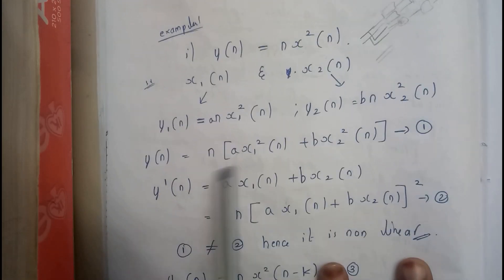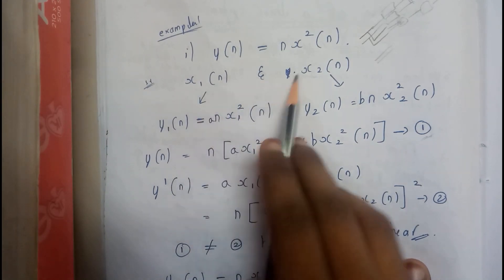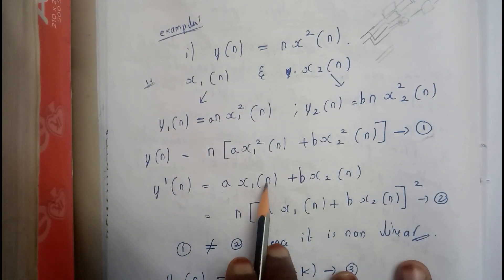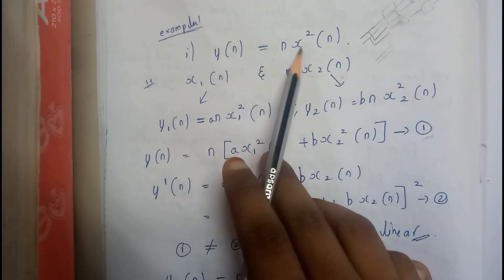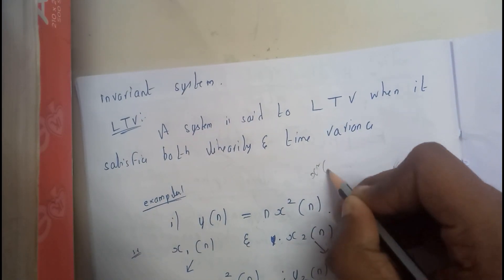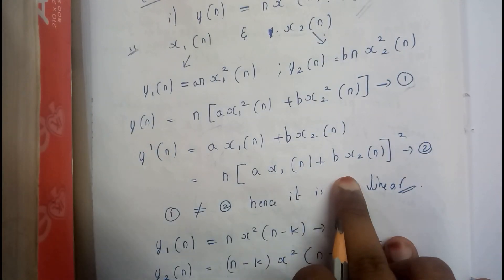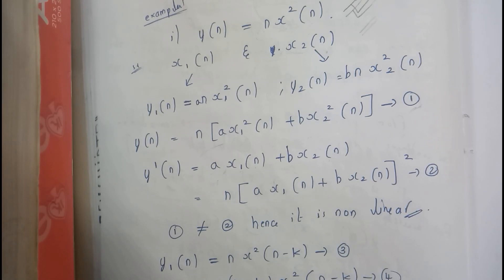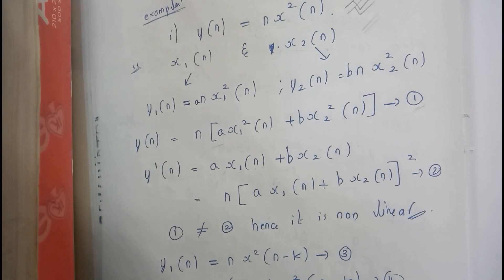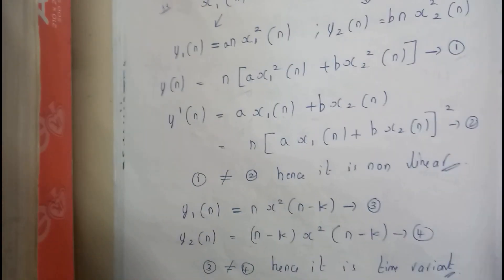We will be adding the final results. In the first case we get the combined output. In the second situation, we substitute the new X(n) = A·X1(n) + B·X2(n) directly into the system, giving us n·(A·X1(n) + B·X2(n))² as a whole square. Since these two results are not matching, the system is non-linear. This system does not belong to either LTI or LTV.